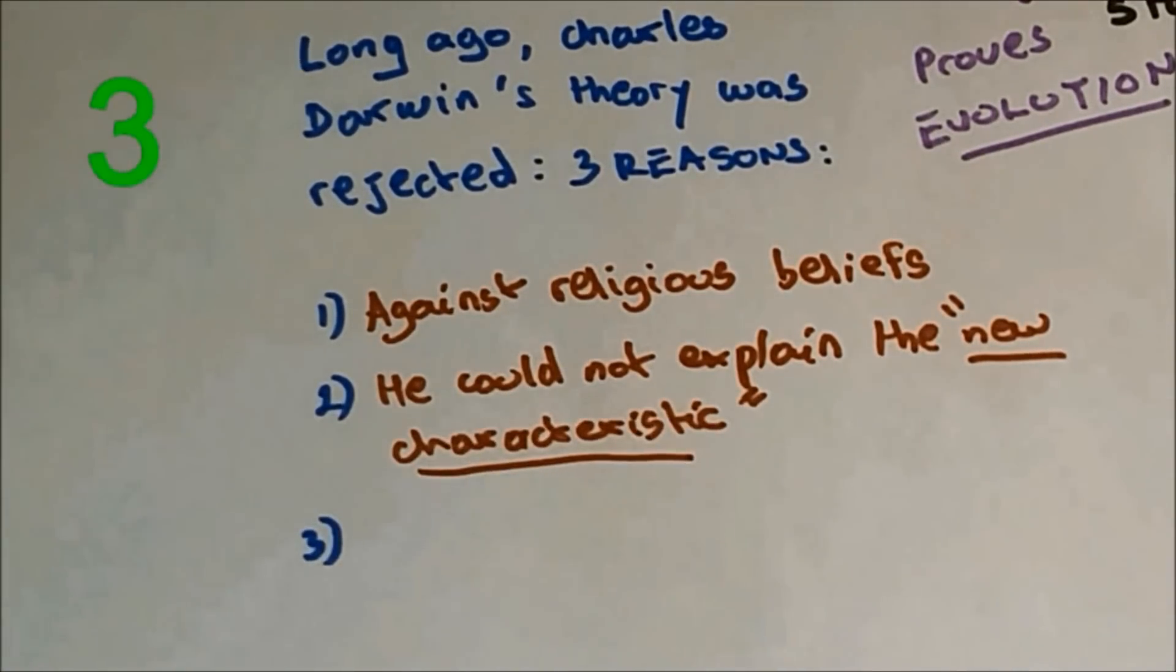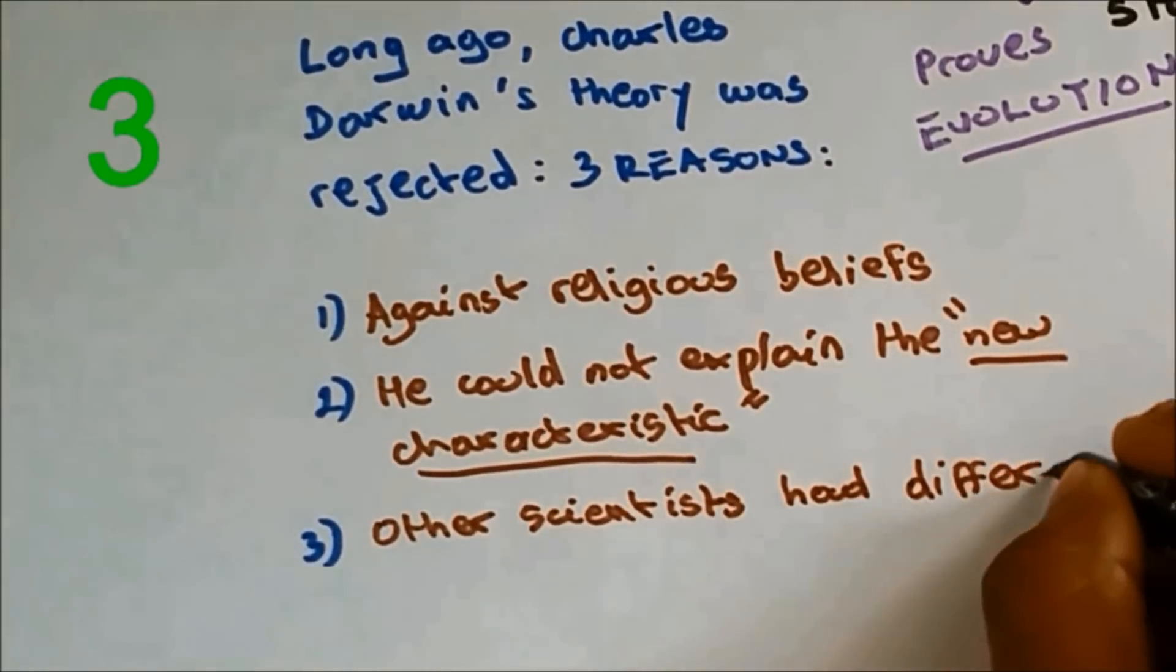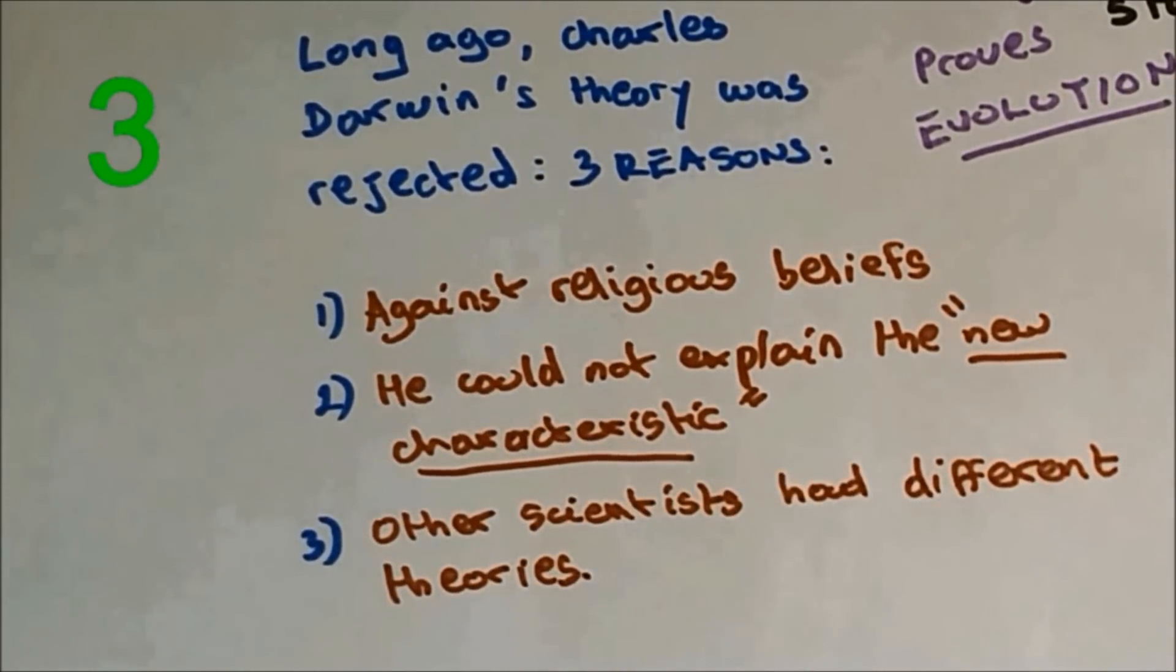Number three, the third reason is because other scientists had different theories. And one of the scientists who was against Charles Darwin was Lamarck.